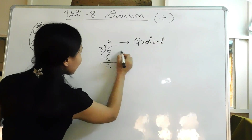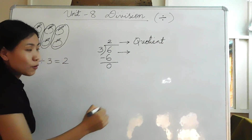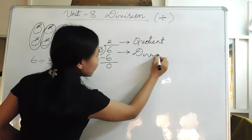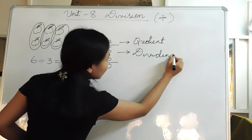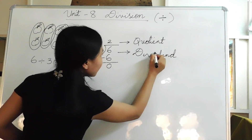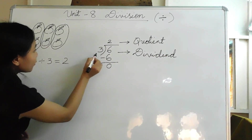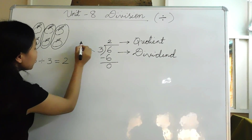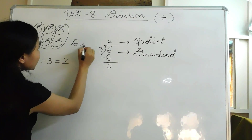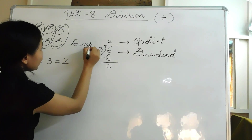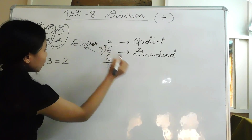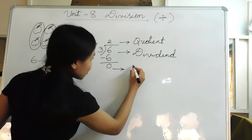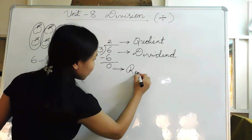The number to be divided is called the dividend. The number that divides another number is called the divisor. And the remaining number is called the remainder.